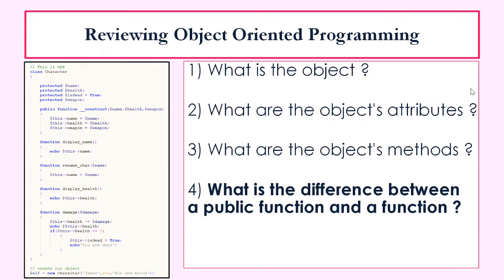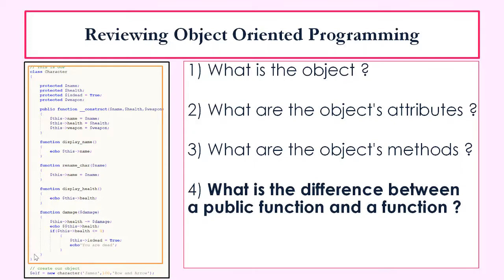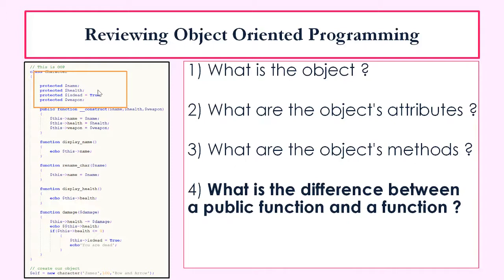Hopefully you've stopped the video and answered the questions. Let's go through them together. What is the object? Well, the keyword to create the object is 'class' and the object name is 'character'. Everything that's in between these two brackets is the object. Here we have the attributes and here we have the methods of the objects. The four attributes are: name, health, is_dead, and weapons.